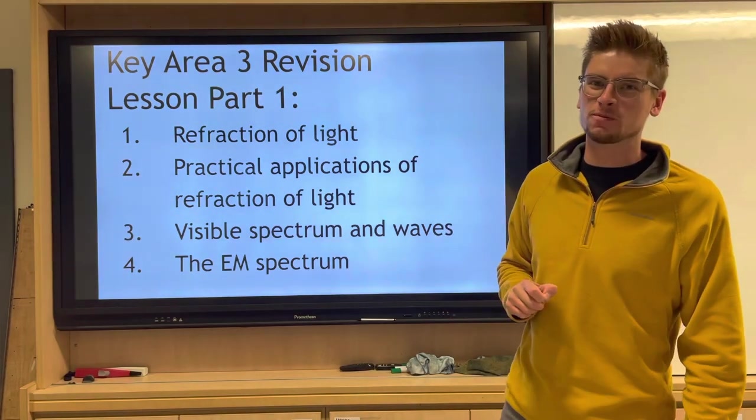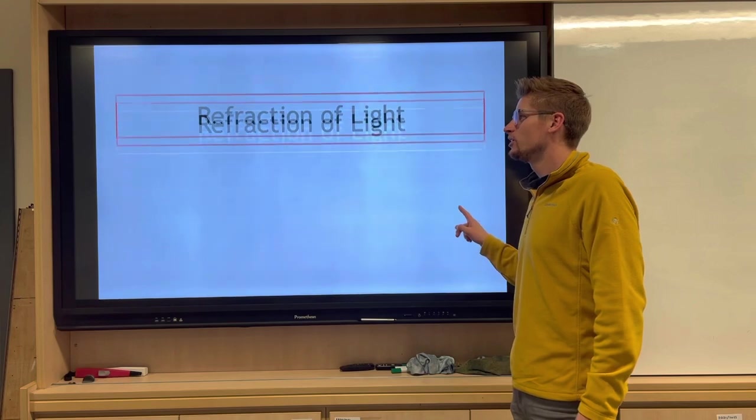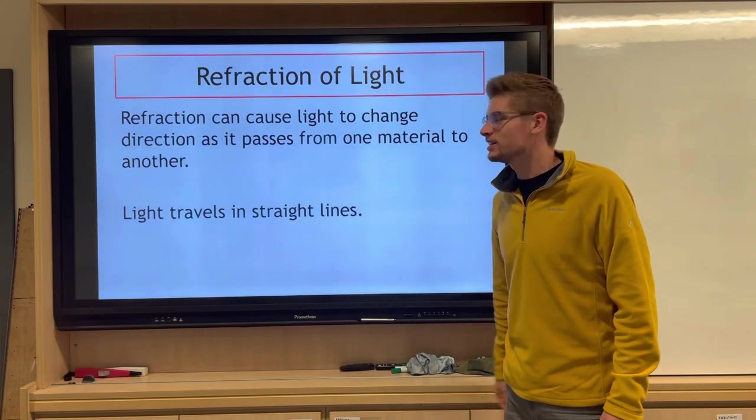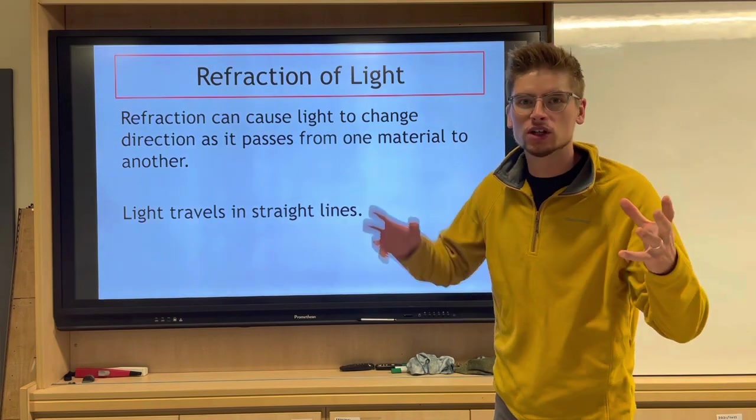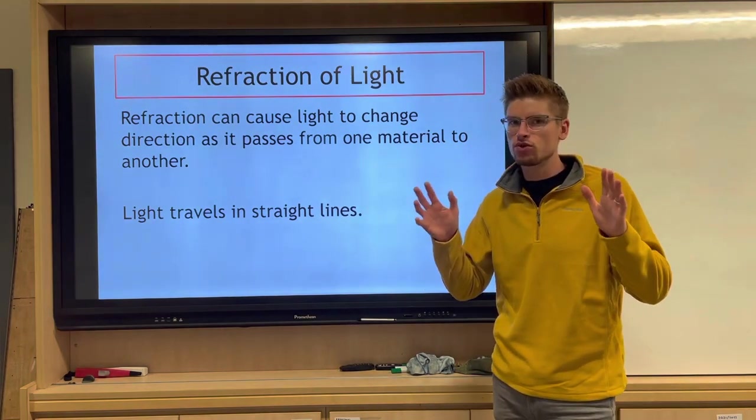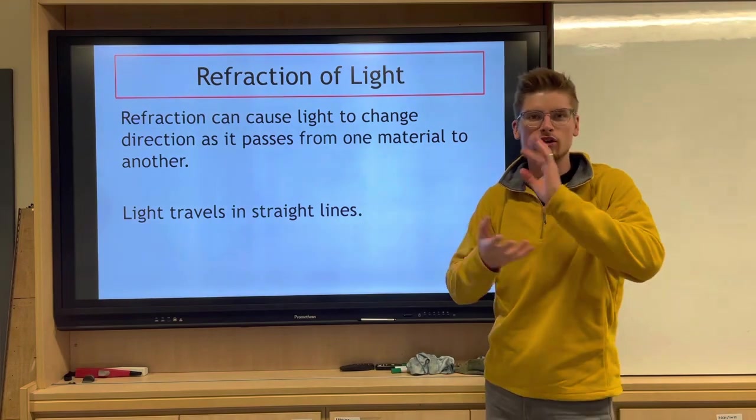Let's crack on with the refraction of light. Refraction's definition is that it can cause light to change direction as it passes from one material to another. That's quite a difficult thing, but let's just pause and say the light also travels in straight lines. It doesn't squiggle around, it always goes in straight lines.